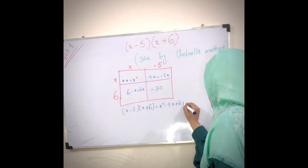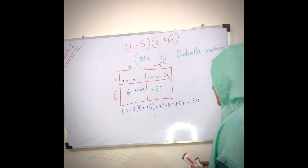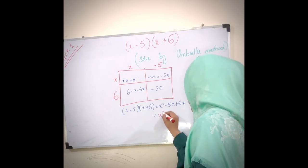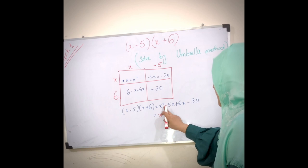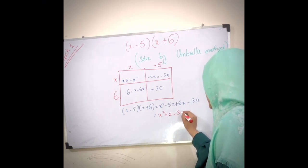And it will come x squared plus... and minus become plus x minus 30.